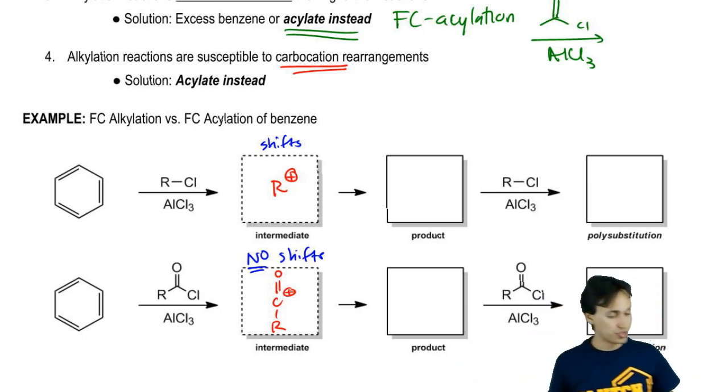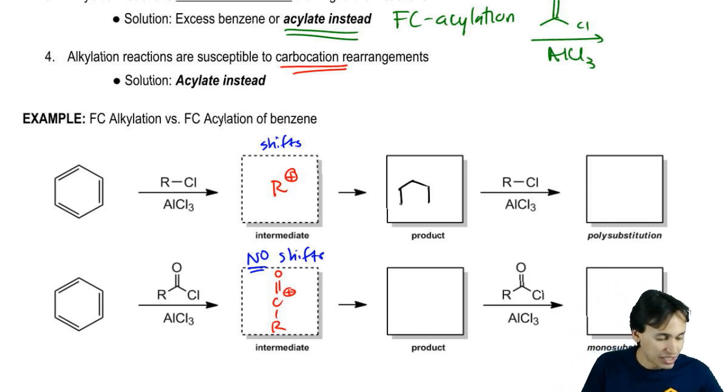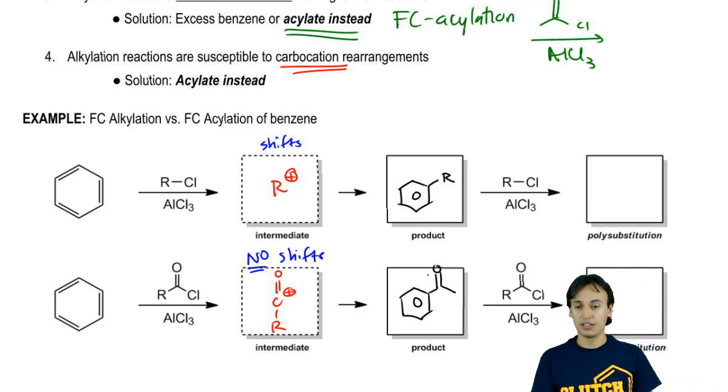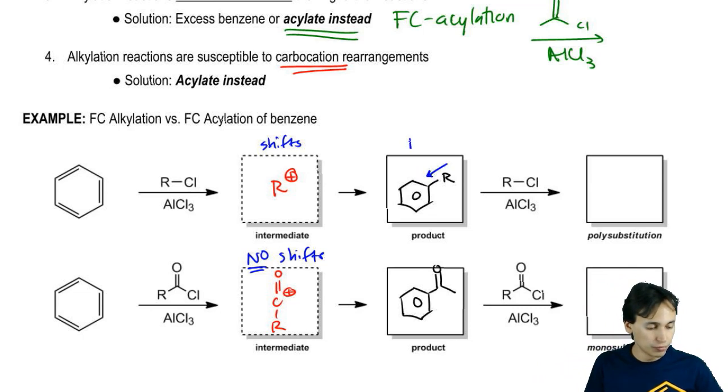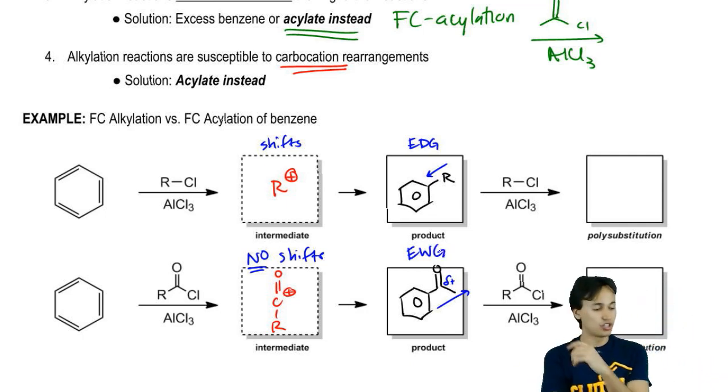Now let's look at the product. What happens when I add these groups? For my benzene ring with the alkylation group, I'm going to get an R group. When I add my acyl group, I'm going to wind up getting a ketone. What's the difference in terms of activity? There's a huge difference because this is an electron donating group, but a ketone, since it has a partial positive, is actually an electron withdrawing group.